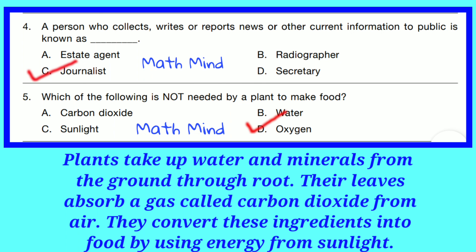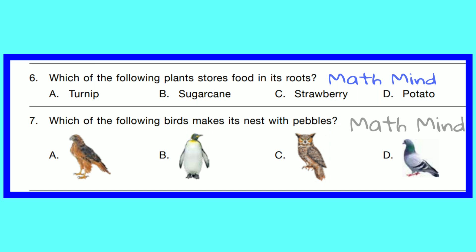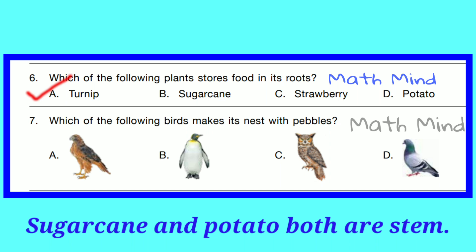Question No. 6. Which of the following plants stores food in its roots? Option A is correct — Turnip. Turnip is a root. Sugar cane and potato are both stems. Strawberry is a fruit. So Option A, Turnip, is correct.